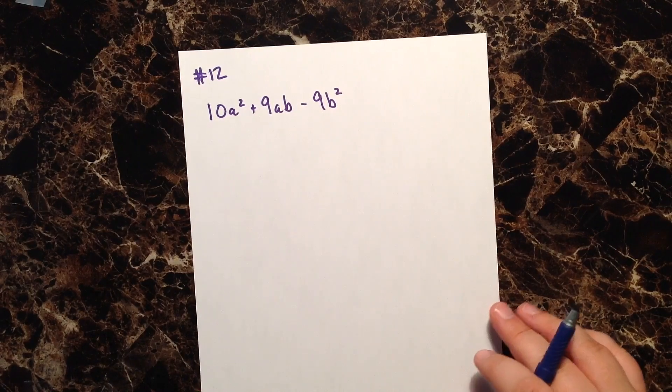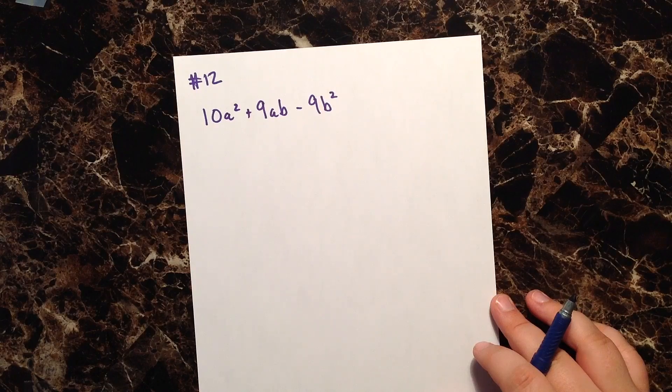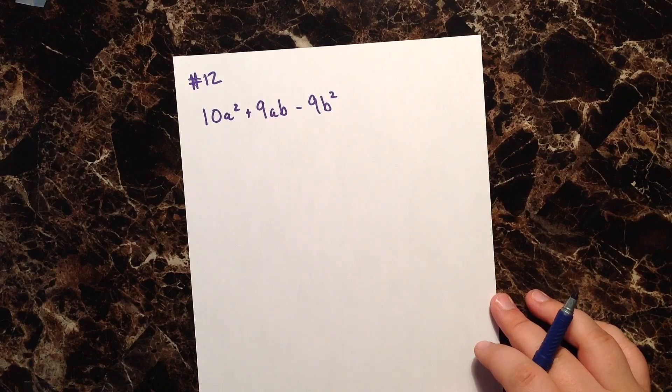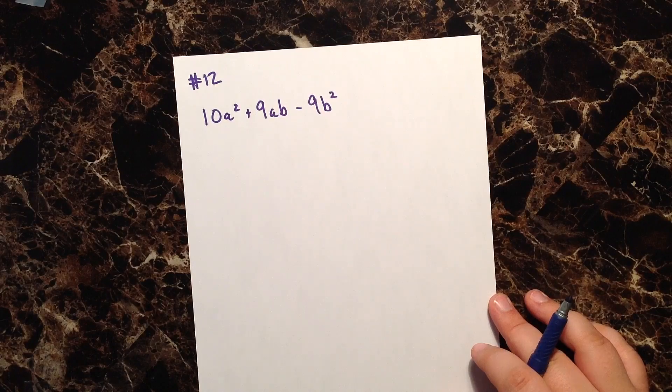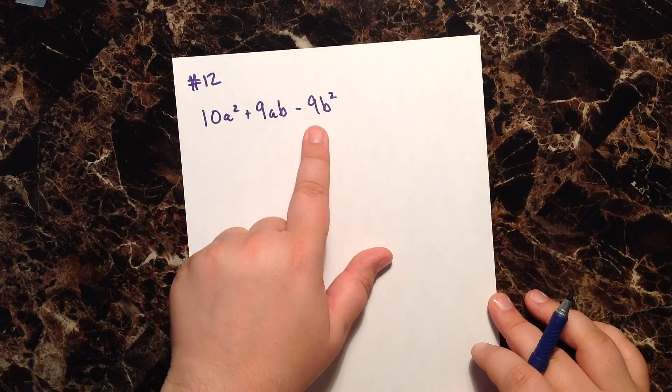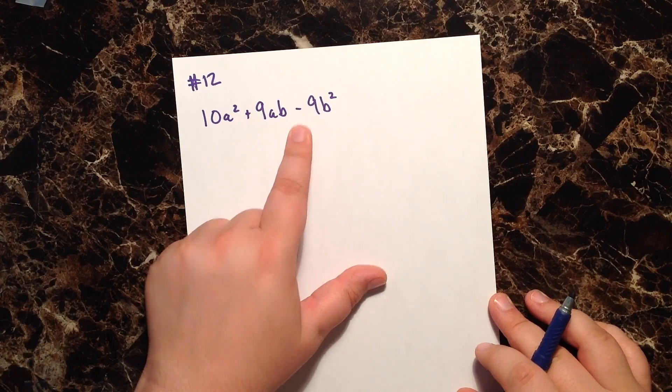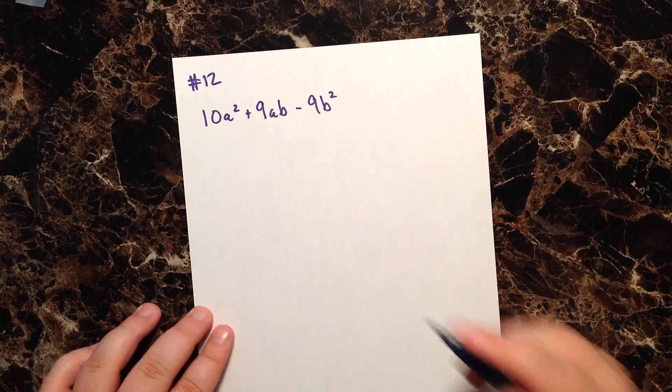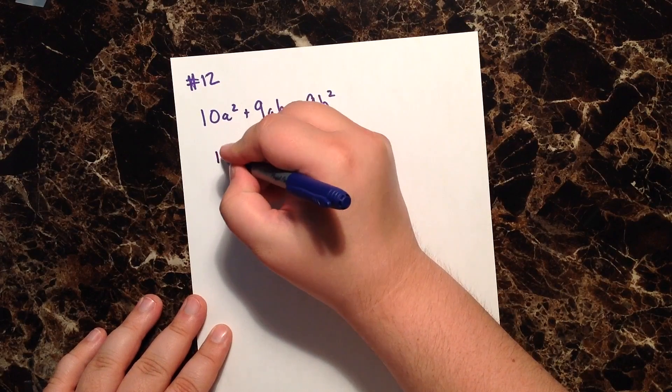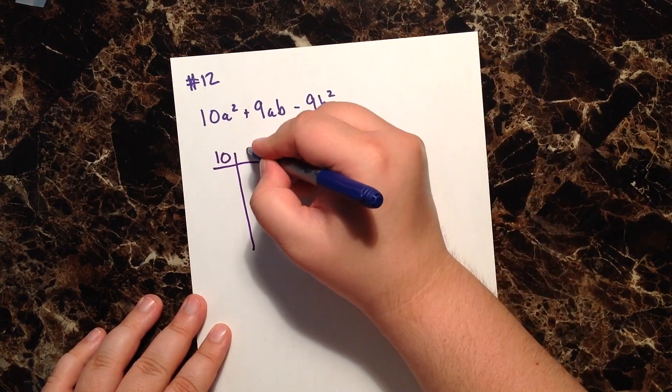You may recall that when we are factoring a trinomial, we are going to use the scissors method. In order to do that, we are looking for factors of 10 and factors of 9 that subtract to give me a positive 9 in this case. So let's go ahead and set up a chart, and we'll start coming up with some of these factors to see what we're going to use in the scissors.